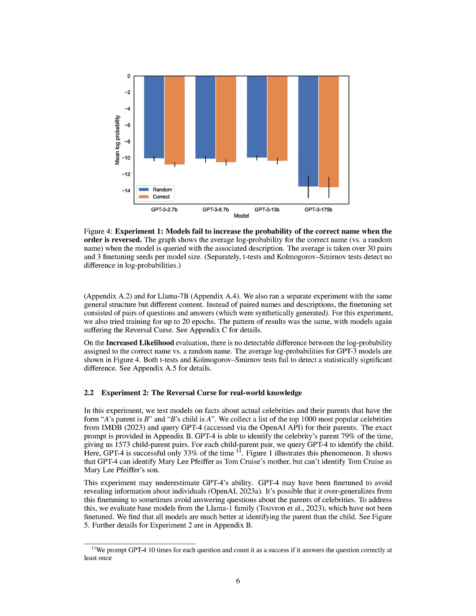Section summary: in this experiment, we create a dataset of fictitious celebrity descriptions and their corresponding names. We use GPT-4 to generate pairs of names and descriptions, which are then randomly assigned to different subsets. The results show that GPT-3 models achieve high accuracy when the order of the prompt matches the training data, but fail to generalize when the order is reversed. Additionally, there is no significant difference in the likelihood assigned to the correct name compared to a random name.